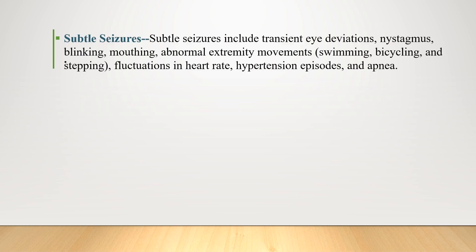Subtle seizures include transient eye deviation, nystagmus, blinking, mouthing, and abnormal extremity movements like swimming, bicycling, and stepping, as well as fluctuations in heart rate, hypertension episodes, and apnea.